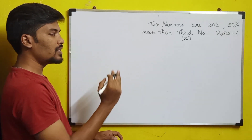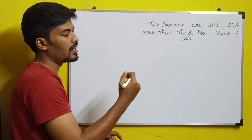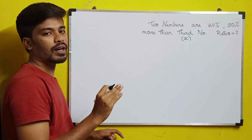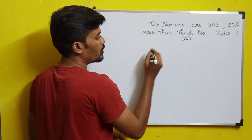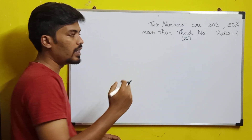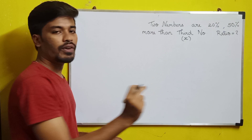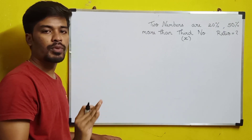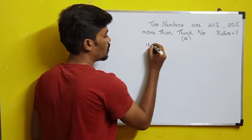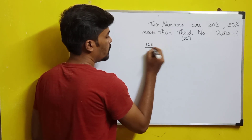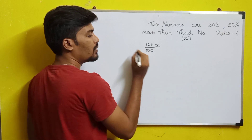We will consider the first number relative to the third number, and the second number relative to the third number. If we take the first number, it is 20% more than the third number. So if X is the third number, the first number is 120% of X.